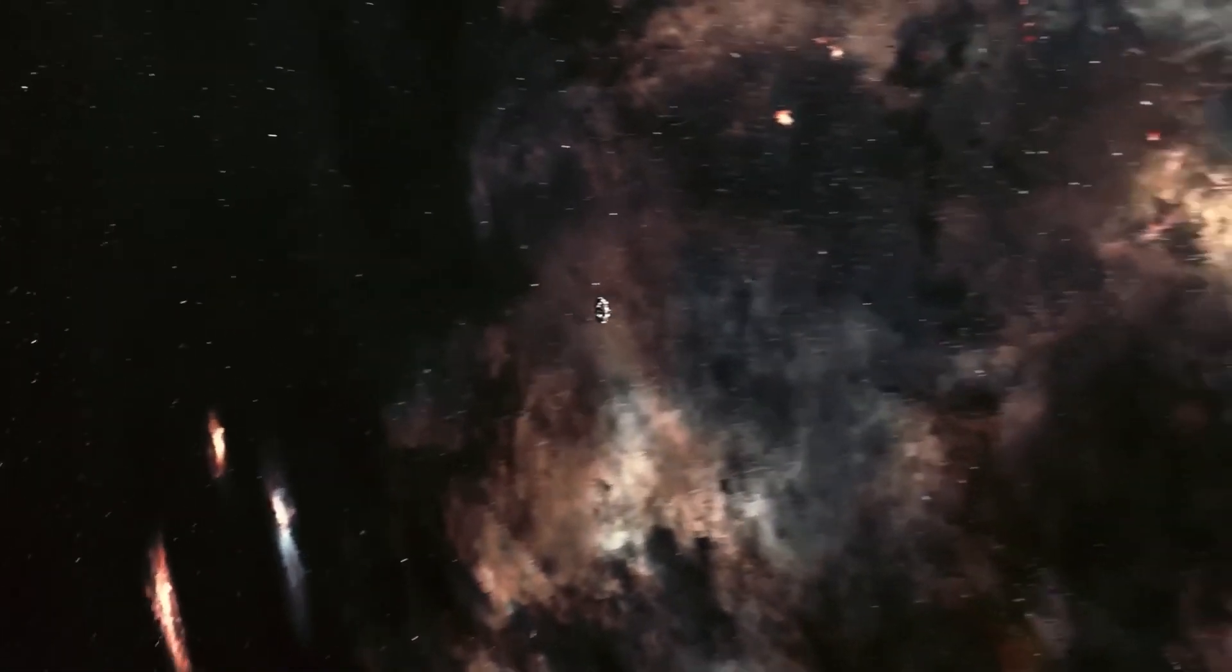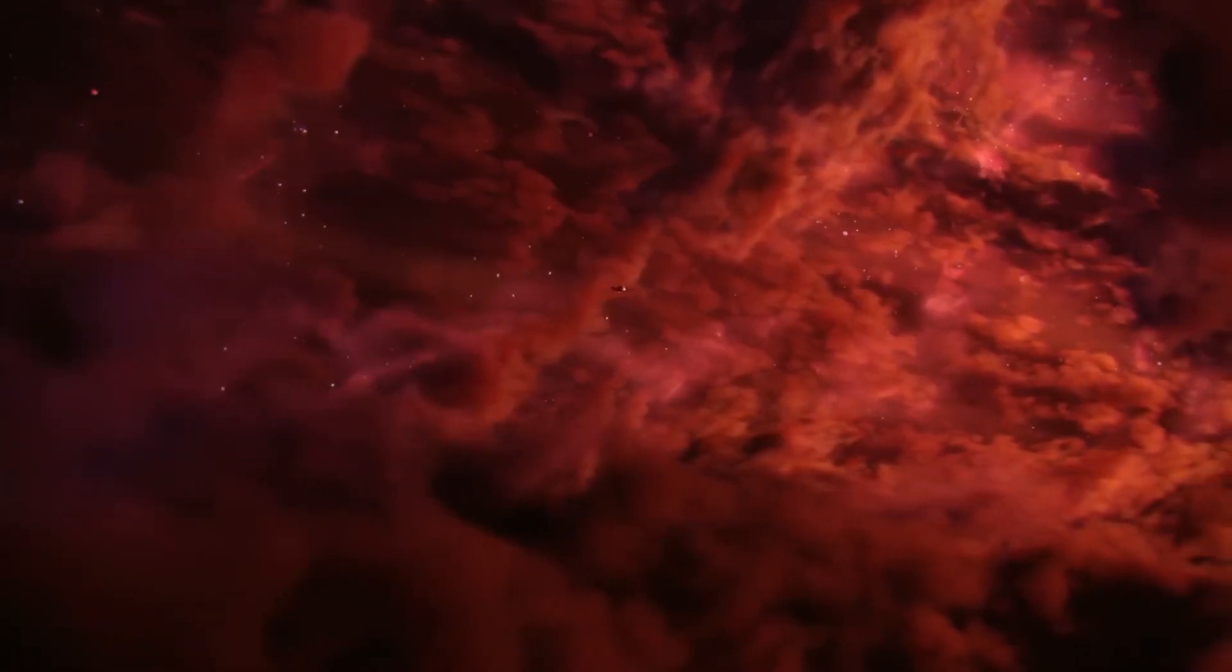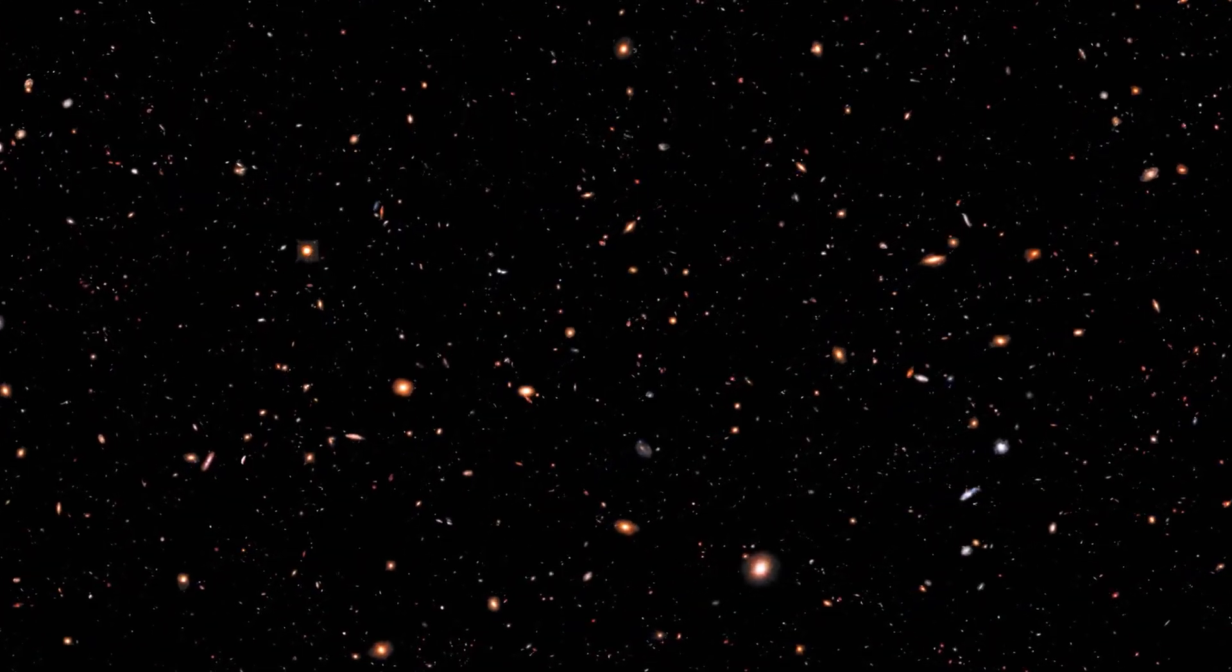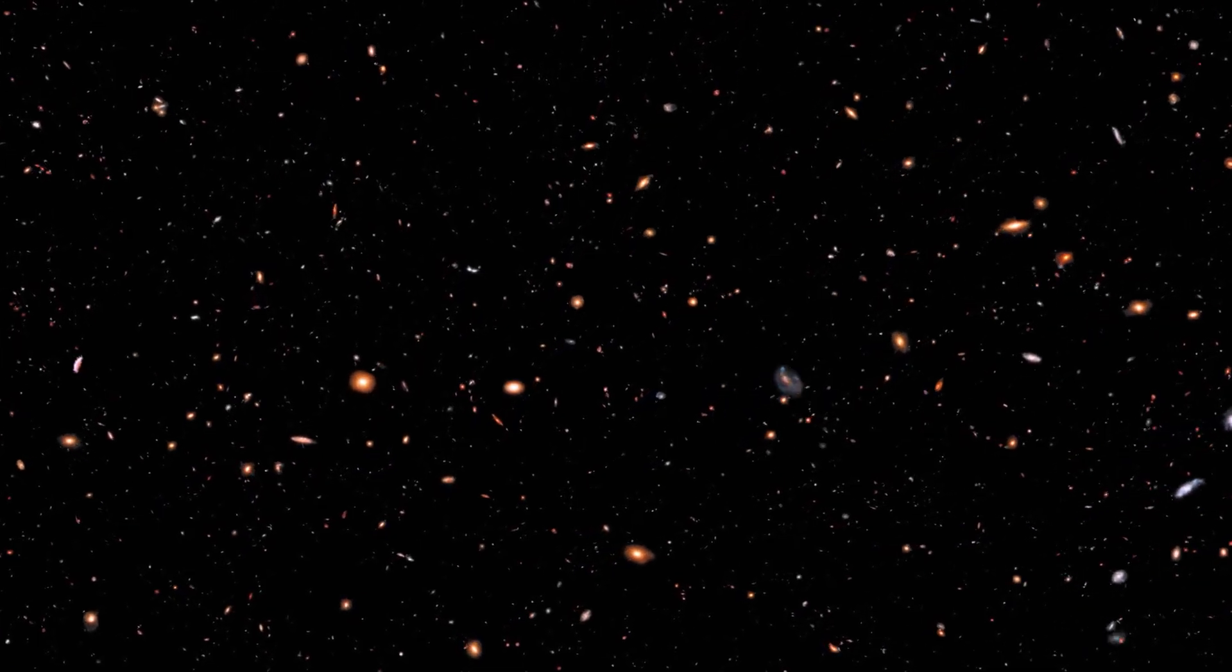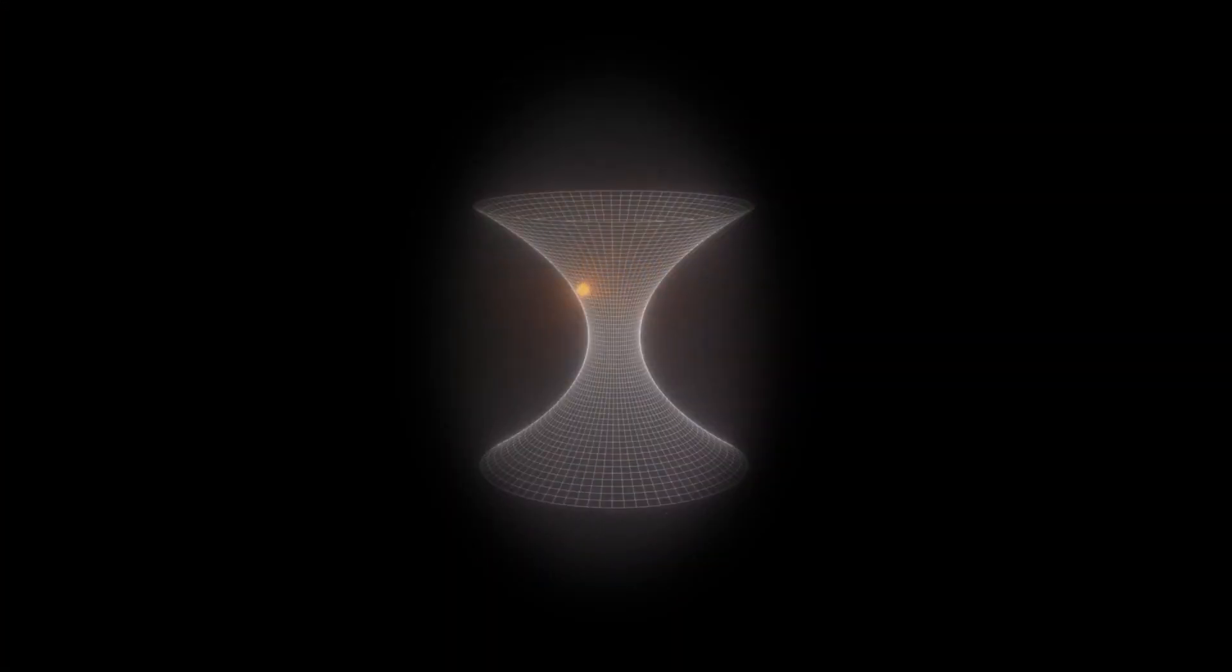Previously, scientists used the motion of objects such as the star S2 to validate general relativity as they pass through the alleged black hole. But then there's G2. This object, which could or could not be a cloud of hydrogen gas, flew by Sagittarius A star a while ago and wasn't torn apart as expected.